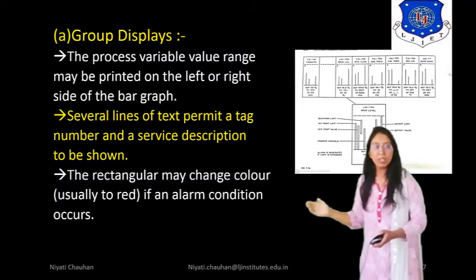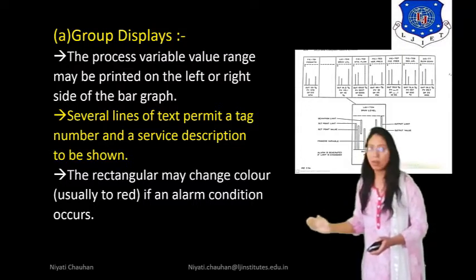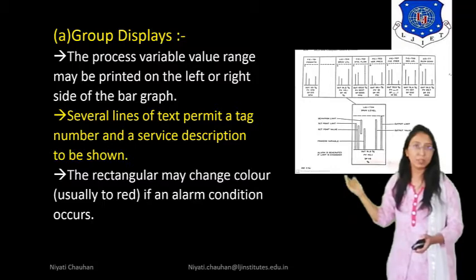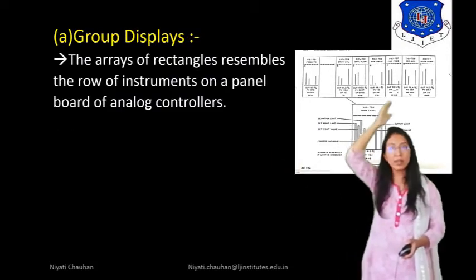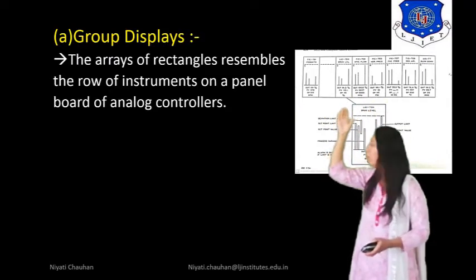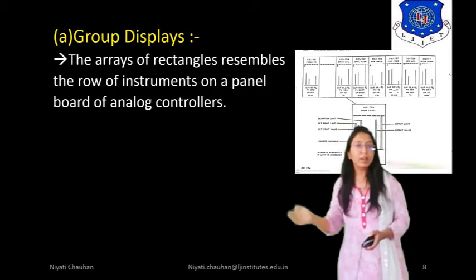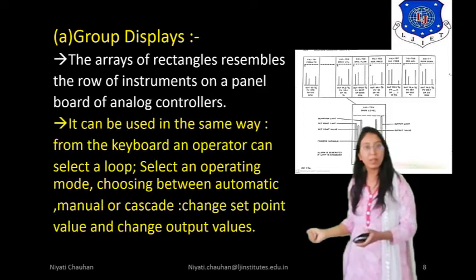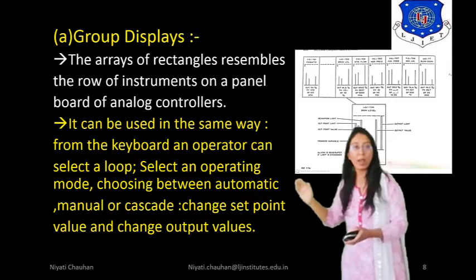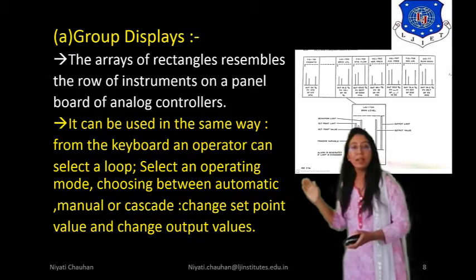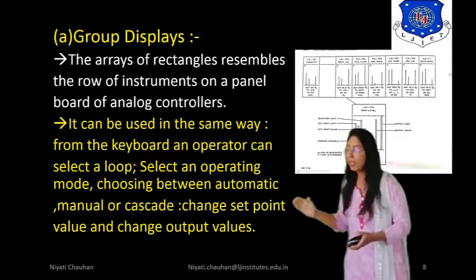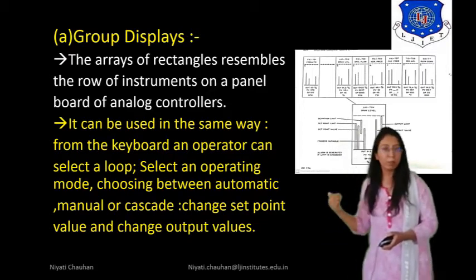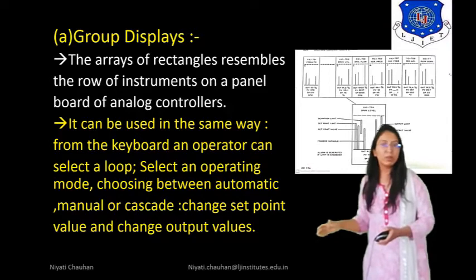The rectangle may change color — usually to red — if an alarm condition occurs. The array of rectangles resembles the row of instruments on a panel board of analog controllers. We can rearrange our process variables and change their order as required. From the keyboard, an operator can select a loop, select an operating mode choosing between automatic, manual, or cascade, and change the set point value and output values.